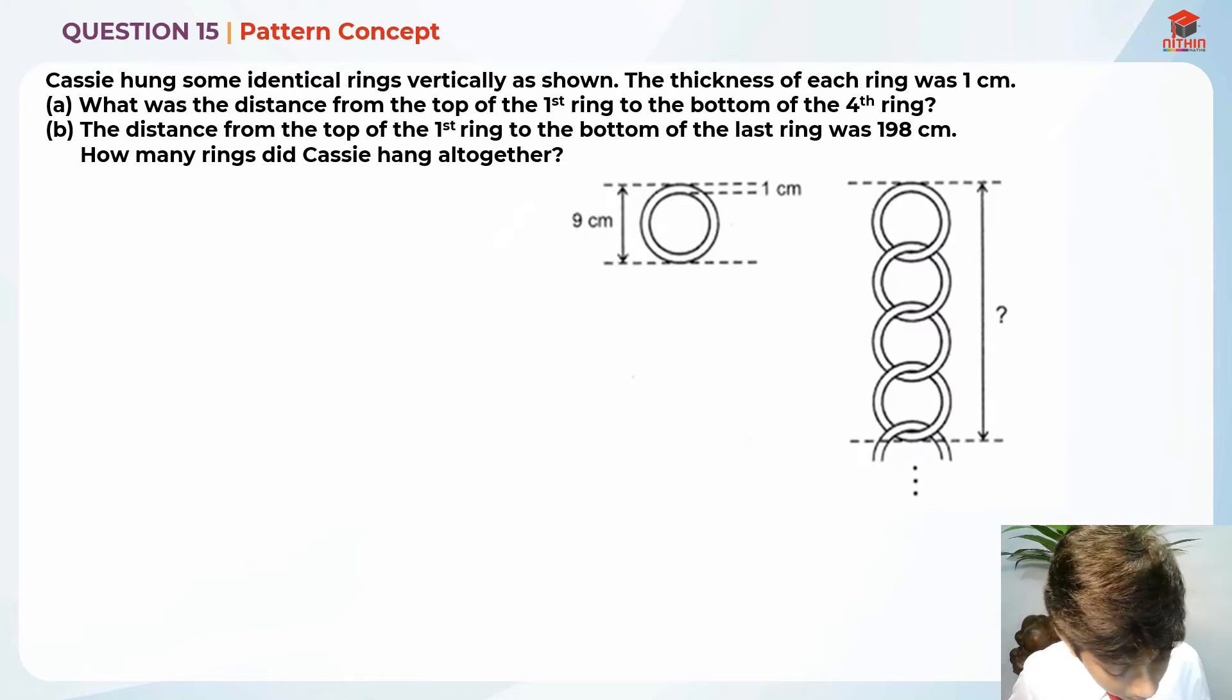So there are identical rings. The thickness of each ring was 1 cm. And the total ring is basically 9 cm, right? And this is only 1 cm. What was the distance from the top of the first ring to the bottom of the fourth ring?